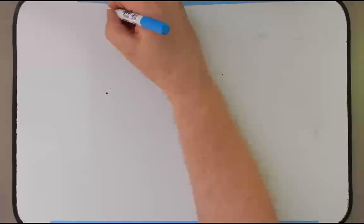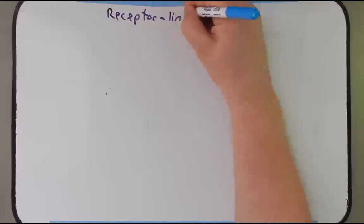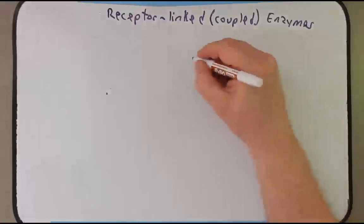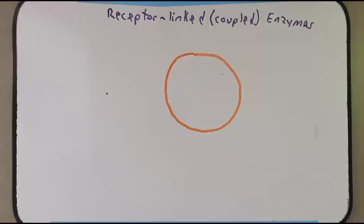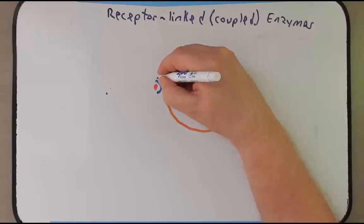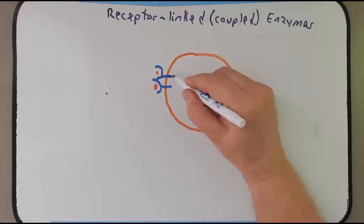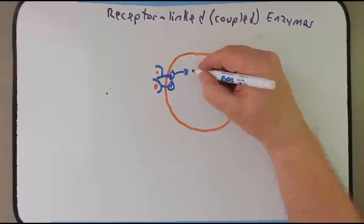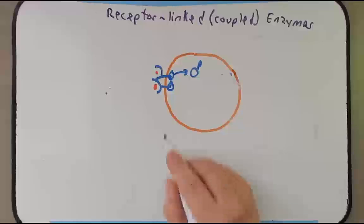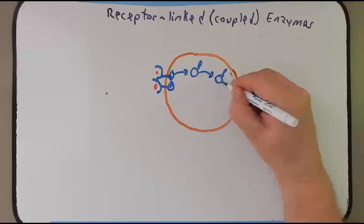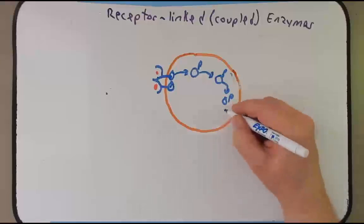Let's start talking about receptor linked, or sometimes called receptor coupled, enzymes. Essentially, we have a cell with a receptor in the plasma membrane, and just as we've seen before, a signal will bind to it — it could be a hormone or some other signal. Instead of activating a G protein, it will bind or form a dimer with another receptor. Upon doing that it will activate these ends, and the activated receptor linked enzymes will phosphorylate downstream targets, eventually leading to some desired response.